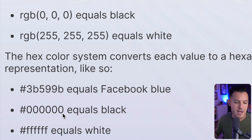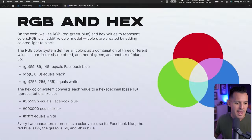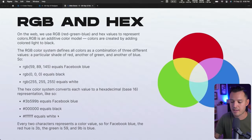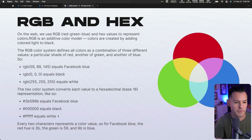When you have a hex value where all characters match or repeat, we usually just say the first two or three. For instance, 000 is black, FFF is white, and EFEFEF we just call EF. That's how hex values work. Every two characters represents the color value — so for Facebook blue, the red hue is 3B, the green is 59, and the blue is 9B. There are tools online to convert hex to RGB and back; I'll put a link in the chapter notes.